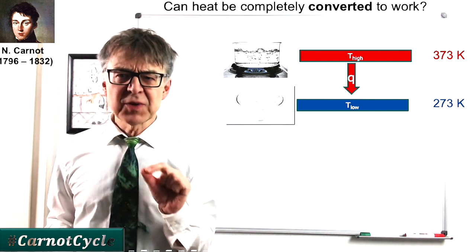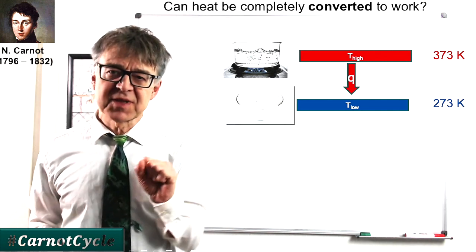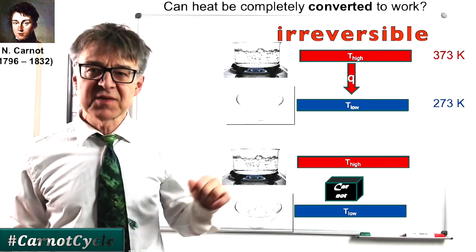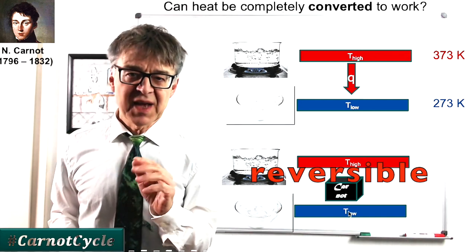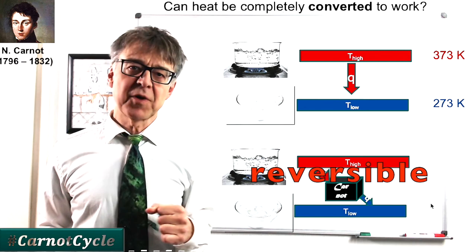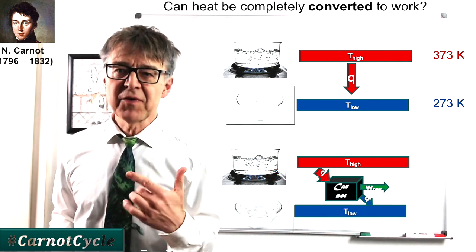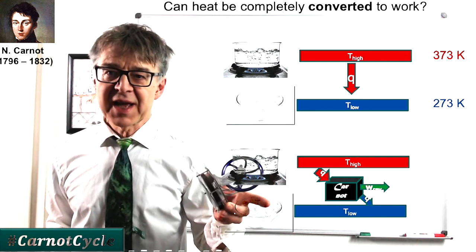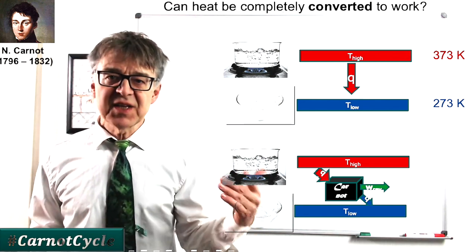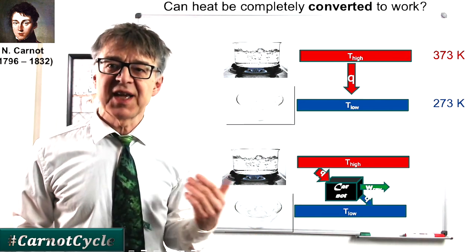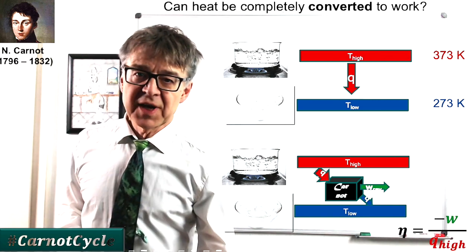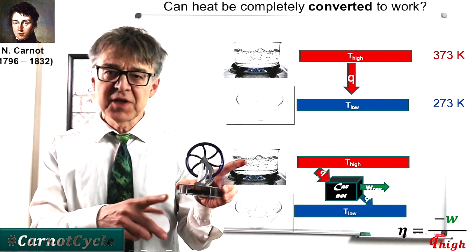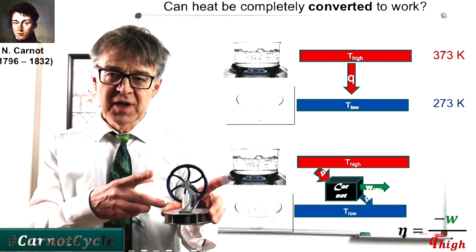Mr. Carnot had thought about how to gain work from this process. He has described a machine that makes this very process, heat transfer from hot to cold, reversible, and thus derives the maximum possible amount of work from it. The Carnot machine is therefore a heat engine, just like a steam engine or a diesel engine, or like a Stirling engine. It converts heat into work with the best possible efficiency, ETA. The Stirling engine is also a heat engine. We have two temperature levels between which heat is transferred and which is converted into work to a certain fraction.